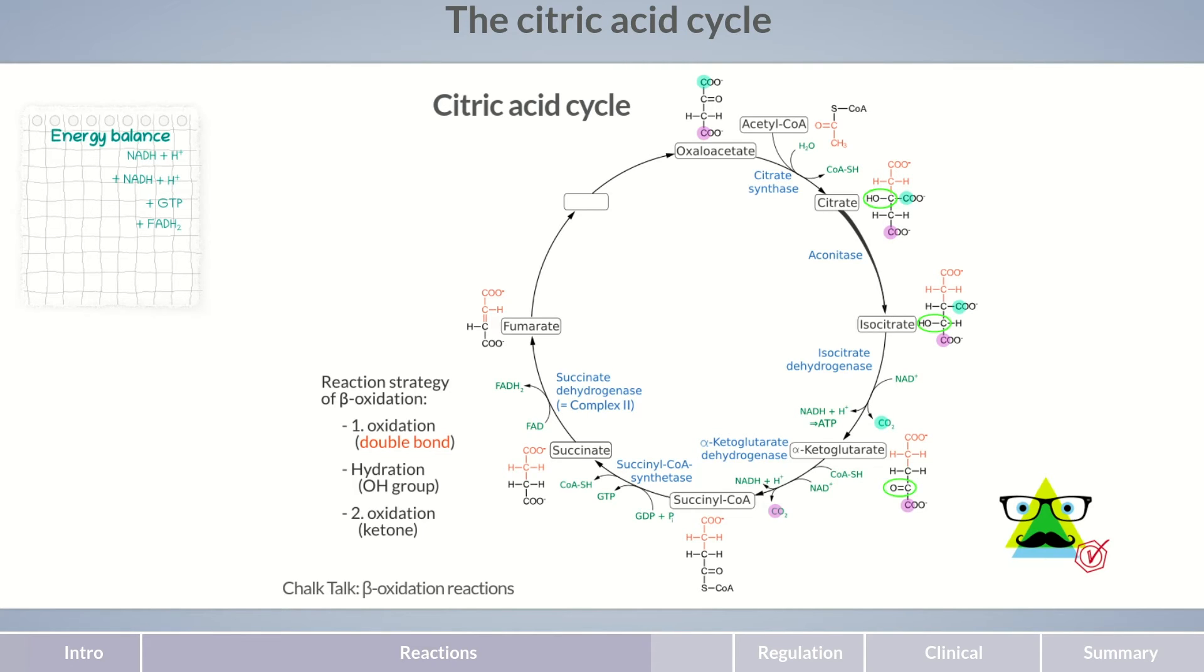In the seventh step of the citric acid cycle, the double bond of fumarate is hydrated by fumarase. As a result, a molecule with an additional alcohol group is formed, malate. This alcohol group is oxidized by malate dehydrogenase to a ketone during the last reaction of the citric acid cycle.